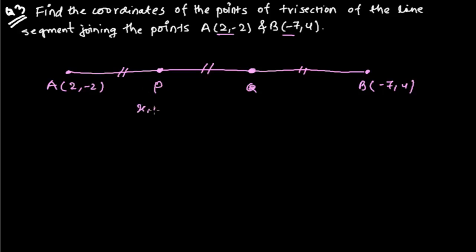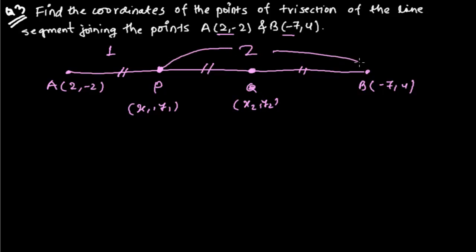Let me say P is the point x1, y1 and Q is x2, y2. To use the section formula I must know the ratio by which each point cuts the line. There are three equal parts. Since P has one part on the left and two on the right, P is dividing AB in the ratio 1 : 2.